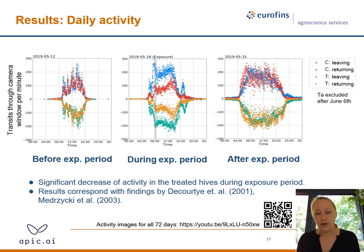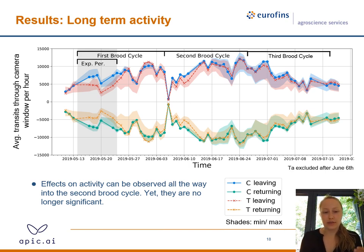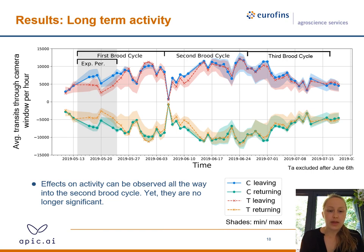If you're interested in all the different days, we have included a link below. Taking a step back, we can look at how the level of activity develops over three brood cycles. The colors remain the same as the previous slide, and error bands symbolize the respective minimums and maximums in each group of four hives. During the gray shaded exposure period, there is a significant change in activity between the control and treated groups, which continues into the second cycle but is no longer significant.